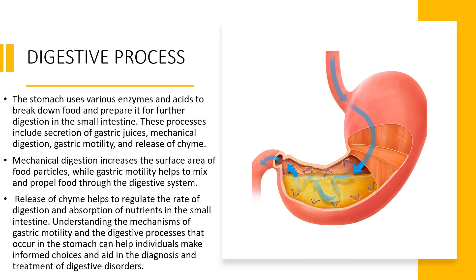Mucus helps to protect the stomach lining from the corrosive effects of the acid. The stomach uses its muscular walls to mix and churn food with the digestive juices, breaking it down into smaller particles — a process known as mechanical digestion. The stomach also has a unique pattern of motility; its muscular walls contract in a coordinated and rhythmic pattern known as peristalsis to mix food with digestive juices and move it towards the sphincter.